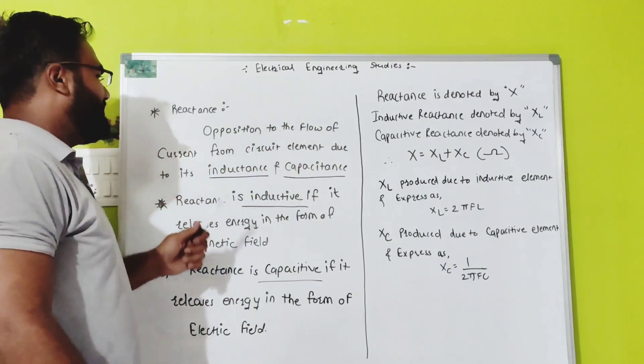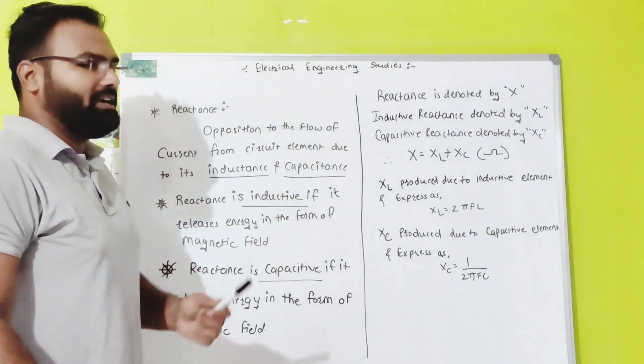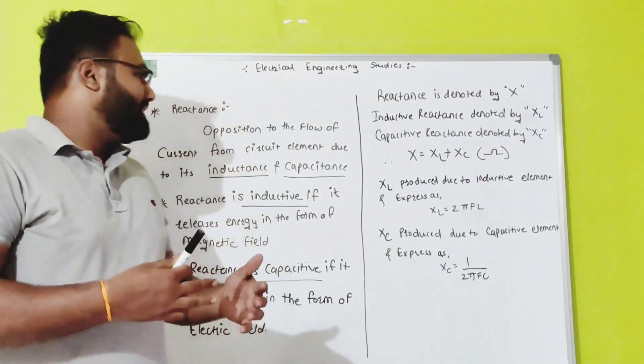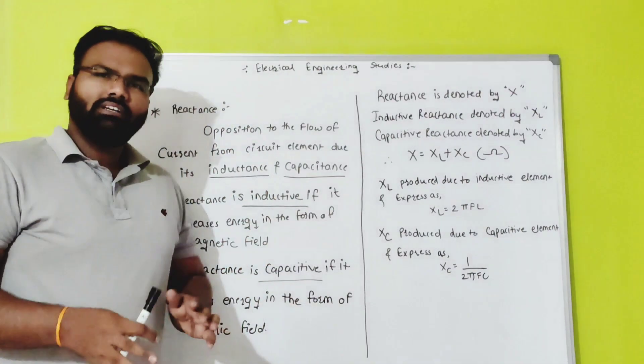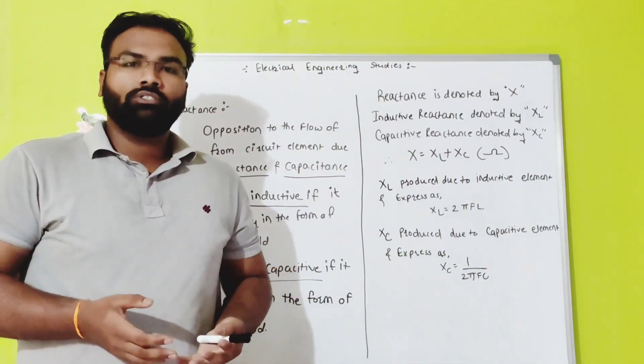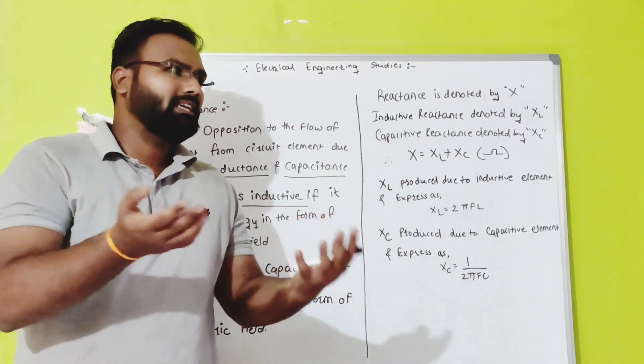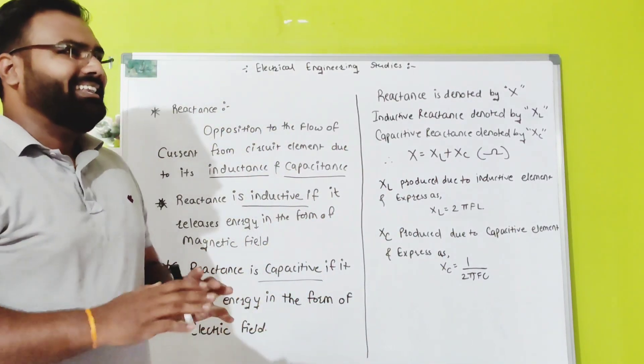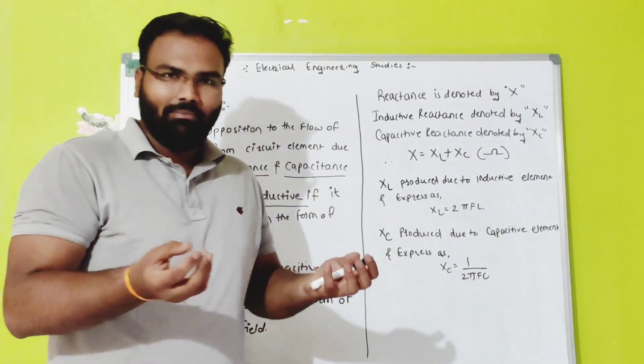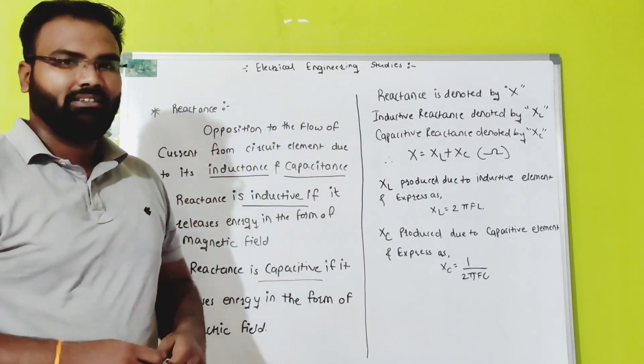Opposition to the flow of current from circuit element due to its inductance and capacitance. So what exactly is it saying? It is nothing but an opposition which is caused by capacitance and inductance. So any kind of opposition which is caused by capacitance or inductance is called as reactance.